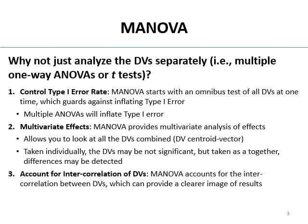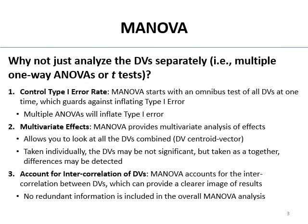When you do MANOVA, it accounts for the fact that the dependent variables are not independent — they're correlated. To the extent your DVs are measuring the same thing, it's sort of like you're analyzing the same data more than once. MANOVA accounts for the correlation between the dependent variables they share, and you get a clearer image of how the groups differ because it takes care of that overlapping variability. There is no redundant information included in the overall multivariate analysis.